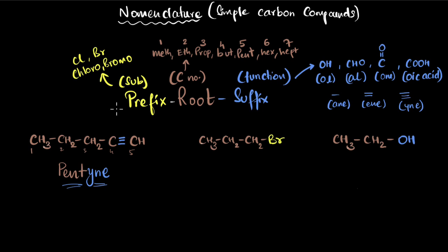All right, again, let's start with the prefix. Do we have a prefix? Yes, we do have a substituent group over here, bromo. So we will start with bromo. Then we go for the root word. For the root word, we count the number of carbon atoms, one, two, three.